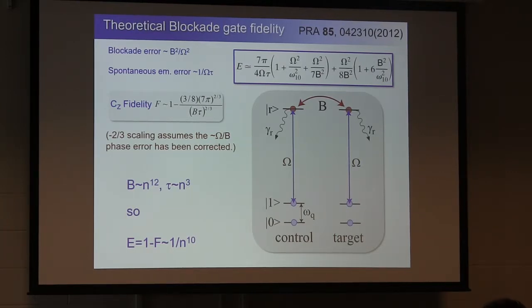Which scales as the product of the interaction strength times the lifetime to the minus two-thirds power. So a little caveat, actually the scaling is minus one-half. There's an additional error term, which I haven't included here, which is there's a phase error in the gate. There's a linear phase error, which is the Rabi frequency divided by the blockade strength. So there's a phase offset, and that can be corrected with an additional pulse. And if I make that correction, I get this minus two-thirds power.